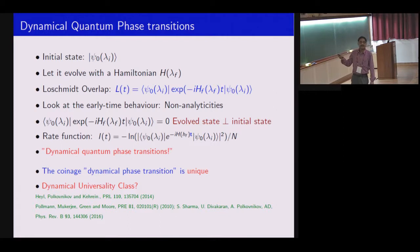You start with an initial state which is psi 0 lambda i. Let it evolve with a Hamiltonian which is lambda f. This is the ground state with parameter lambda i, whereas the Hamiltonian has parameter lambda f. You look at the Loschmidt overlap, or rate function of the return probability—the overlap between the evolved state and the initial state. How much of the initial state is still remaining in your evolved state? Whenever this quantity vanishes, the evolved state is orthogonal to the initial state. I call it a dynamical phase transition. The rate function shows a cusp singularity.